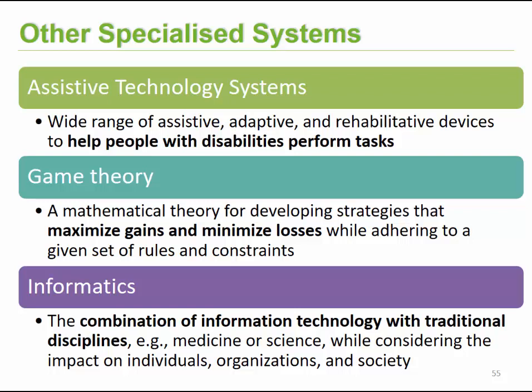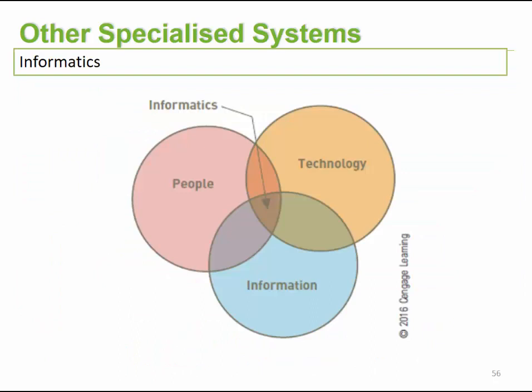Informatics can be classified as a combination of information technology with traditional fields such as medicine or science. Combining a field with technology, information, and the people involved gives us informatics. For example, health informatics brings together health information from hospitals or doctors, the people interacting with that information, and the technology that supports it. Where all three come together, that is where informatics takes place.